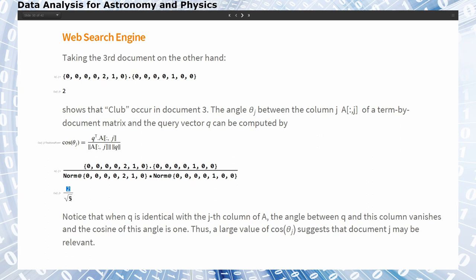When Q is identical with the j-th column of A, the angle between the vector Q and this column of A vanishes and the cosine of this angle is one. So the larger the value of cosine theta is after the multiplication, the closer our query vector is to the actual content of the document. A large value of this cosine suggests that the document may be relevant for our search.